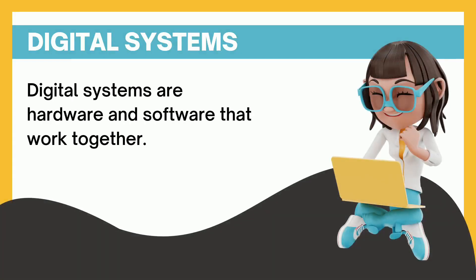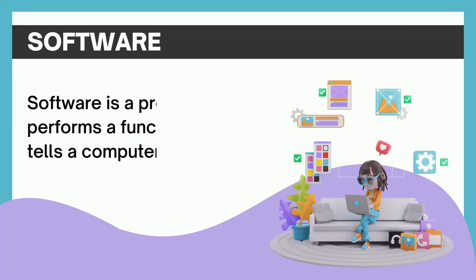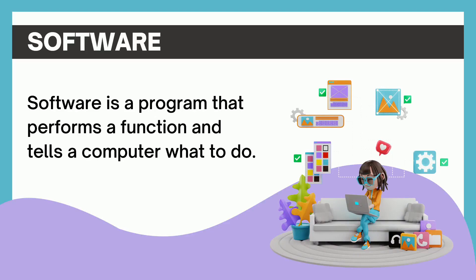Digital systems are hardware and software that work together. Software is a program that performs a function and tells a computer what to do.